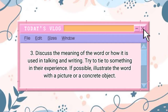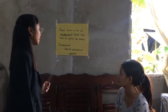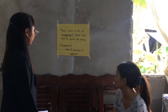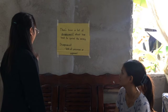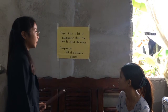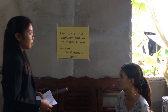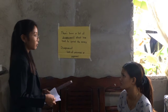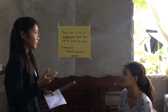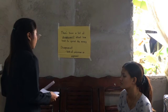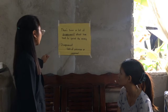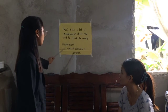Step three: Discuss the meaning of the word and how it is used in talking and writing. Try to tie something to their experience if possible, and illustrate the word with a picture or a concrete object. What does 'disagreement' mean? Disagreement means lack of consensus or approval. For example, if you give suggestions to your group mates about your project topic and some of them didn't agree with your suggestion, that would be a disagreement. The prefix 'dis' is a negative prefix meaning none or not.